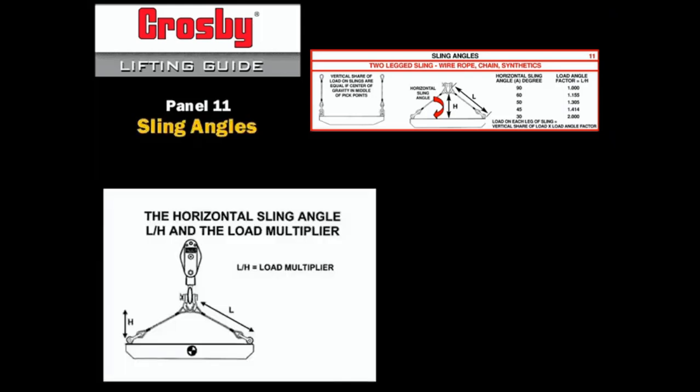A more powerful tool is the use of length over height to calculate the load in each sling leg and in the fitting at the load connection. Remember that the load multiplier increases the vertical load, which is the load if the slings were pulling straight up.